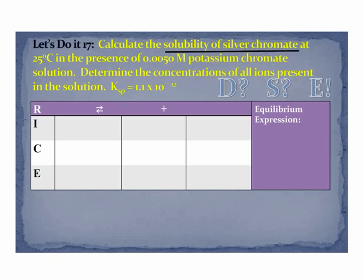It says calculate the solubility of silver chromate, and we're given a Ksp. Those two together should hopefully give you an indicator of what the reaction is. It's Ag₂CrO₄ going to two silver ions plus a chromate ion.